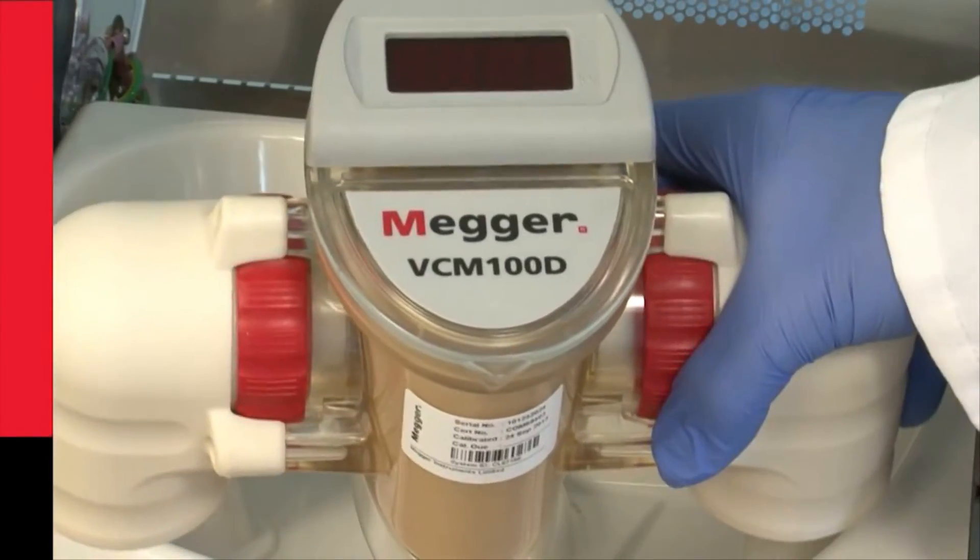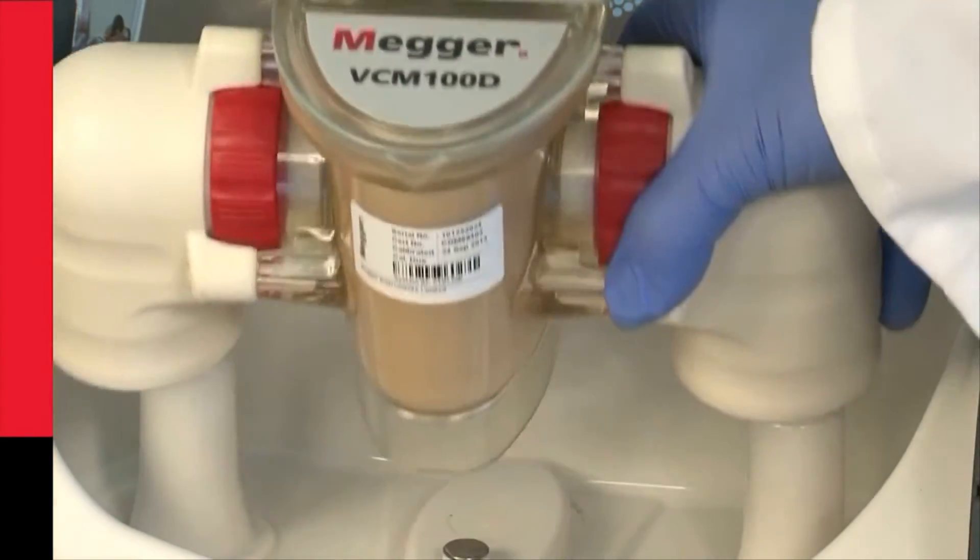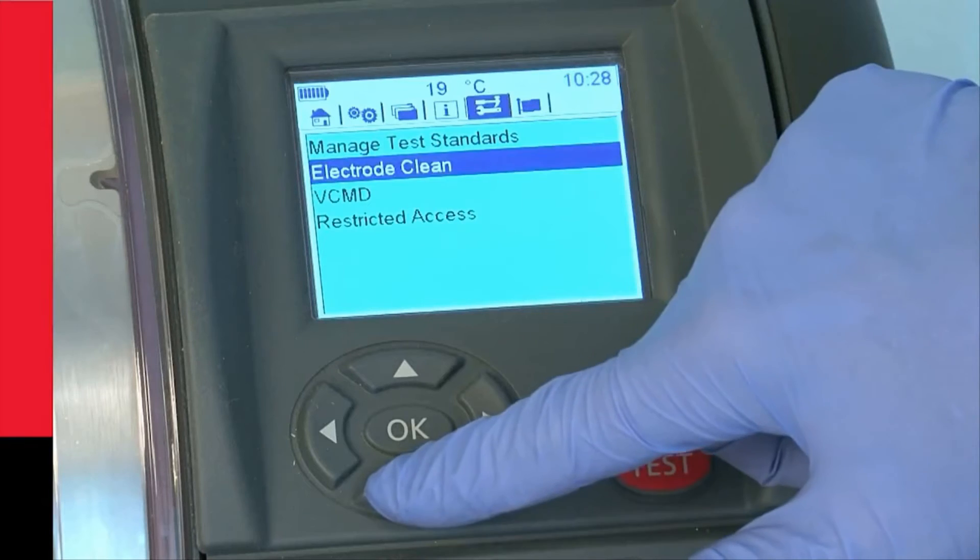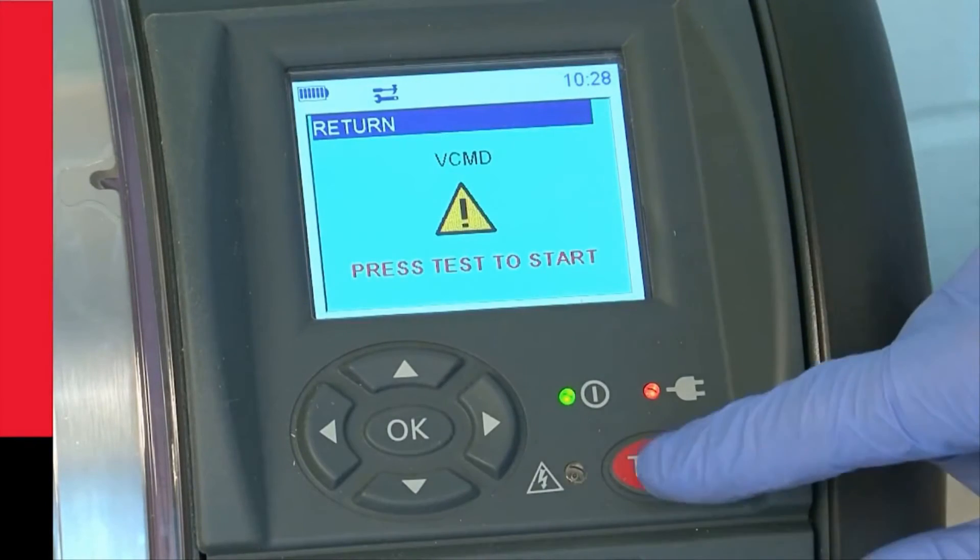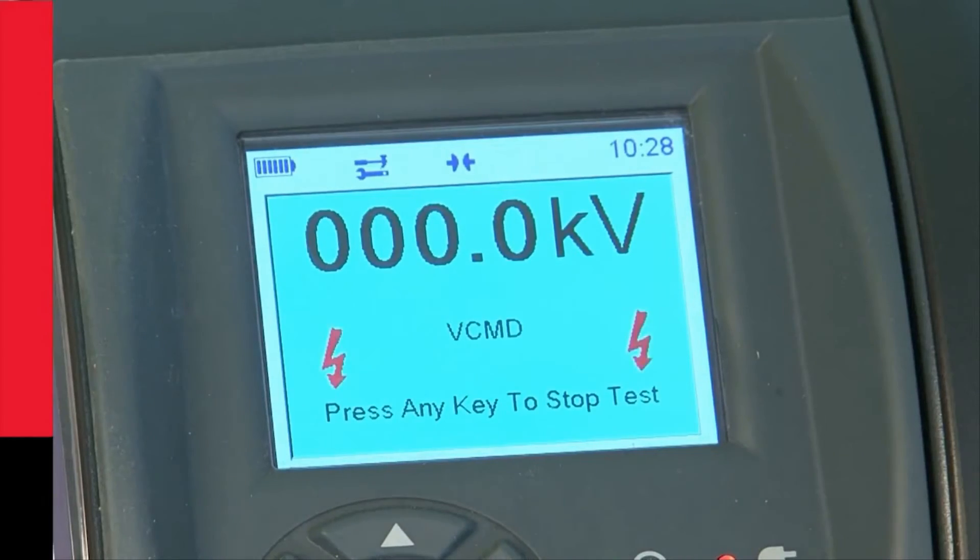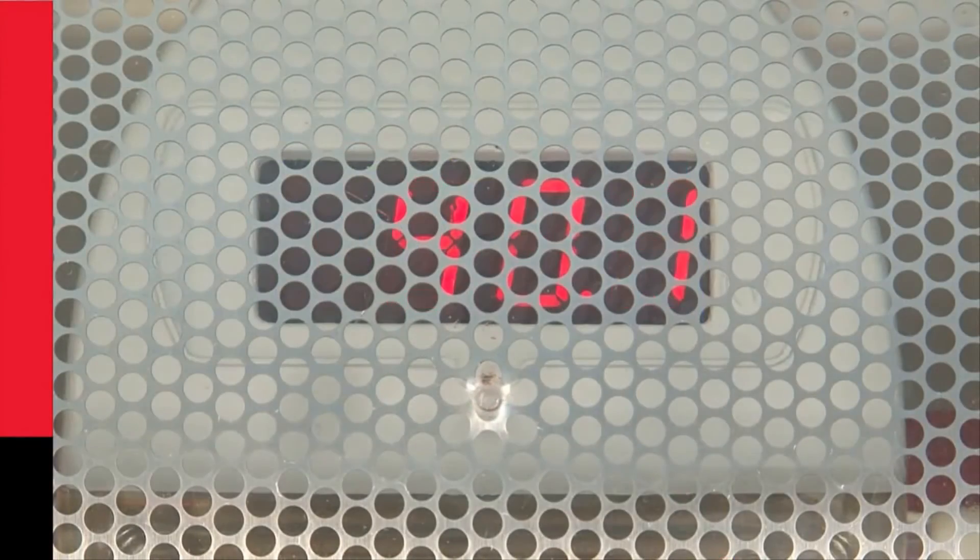The Mega OTS also has optional voltage checkmeters, VCMD100 and VCMD80. These ensure confidence in results by verifying output voltage between full calibration.